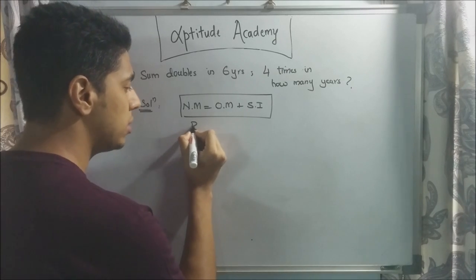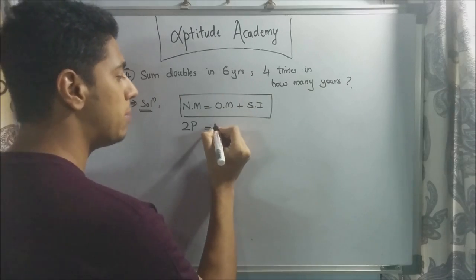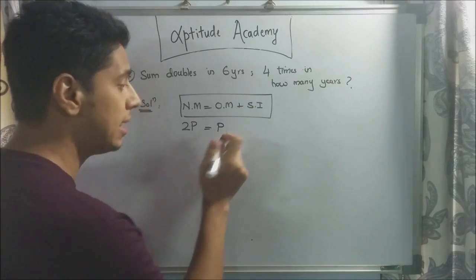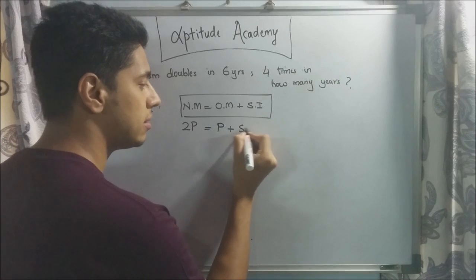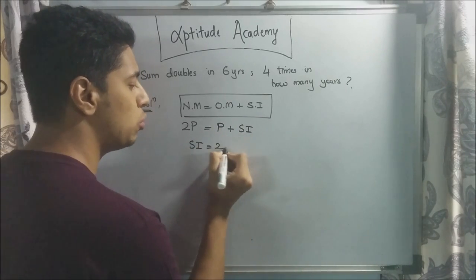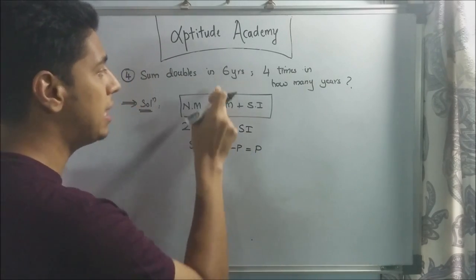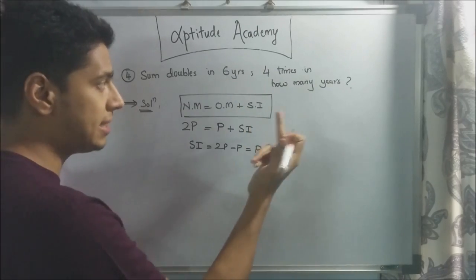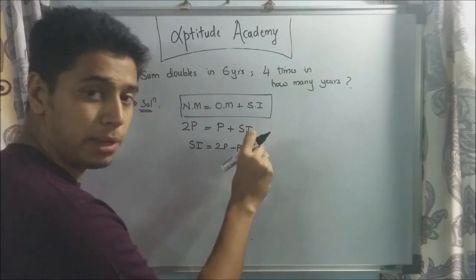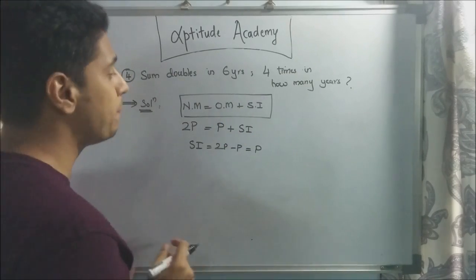What will be your simple interest? If you solve this, you know that SI is equal to 2P minus P is equal to P. Your simple interest will become your principal in six years. Hence, after six years, you will add this new principal to your old principal and that becomes 2P, which becomes double.